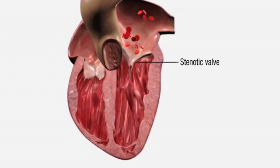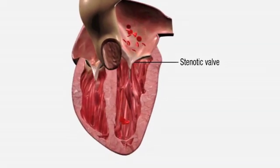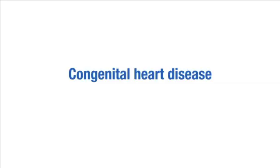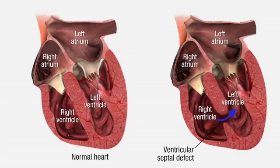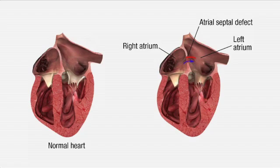Narrowing of the valve is known as stenosis. In mitral stenosis, blood is unable to flow past the narrowed mitral valve and accumulates in the left atrium. Congenital heart diseases are defects in the structure and function of the heart or large vessels present at birth. The most common are ventricular septal defects, where defects in the interventricular septal wall allow mixing of oxygenated and deoxygenated blood, and atrial septal defects, which cause similar mixing due to defects in the inter-atrial septal wall.